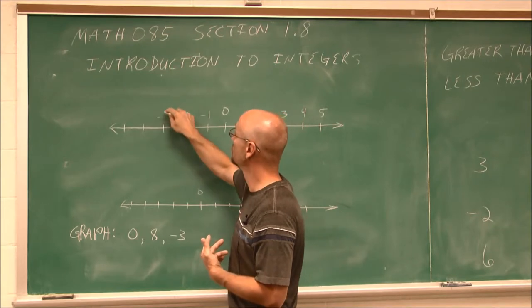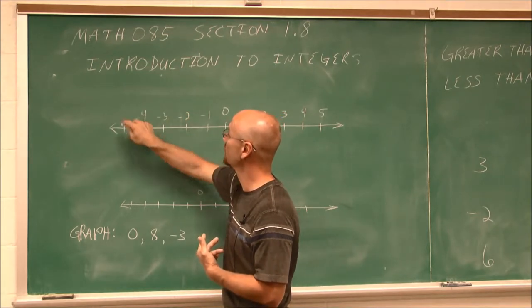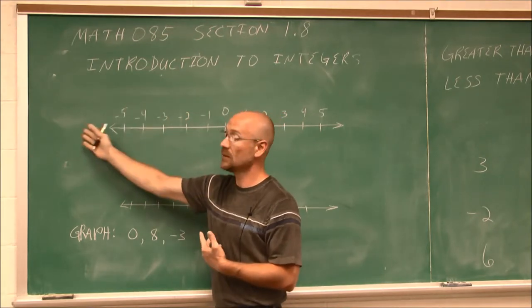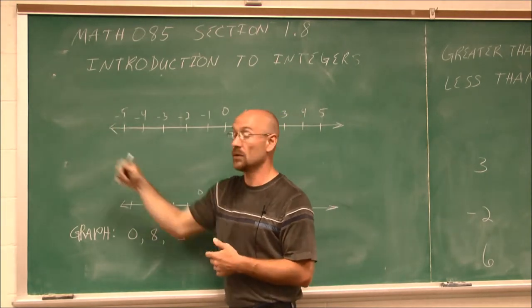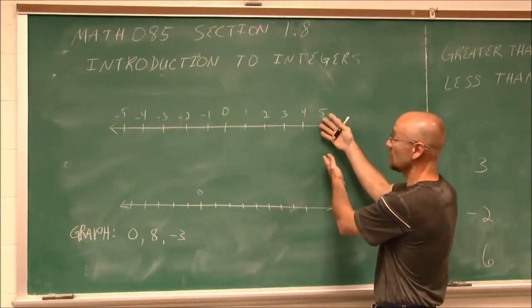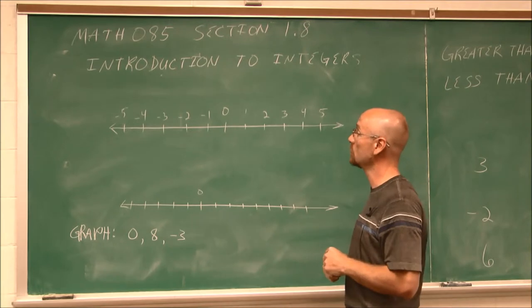Negative 1, negative 2, negative 3, negative 4, negative 5, and so on. This would continue on for infinity. Just like this, we know that these numbers, the whole numbers, continue on for infinity.